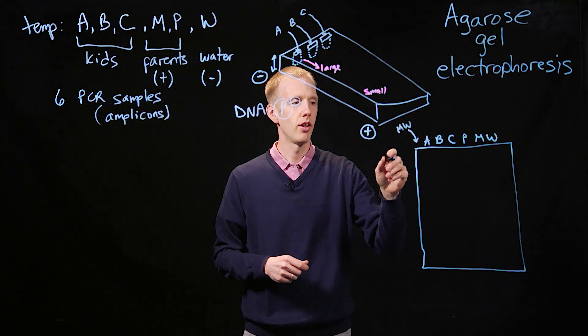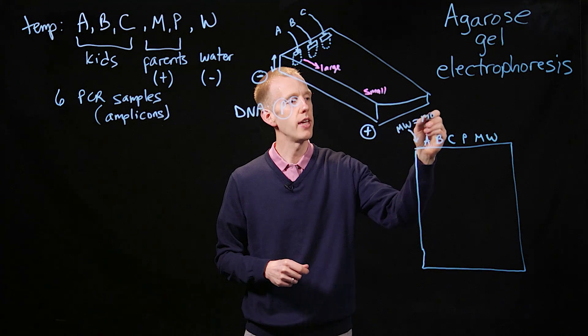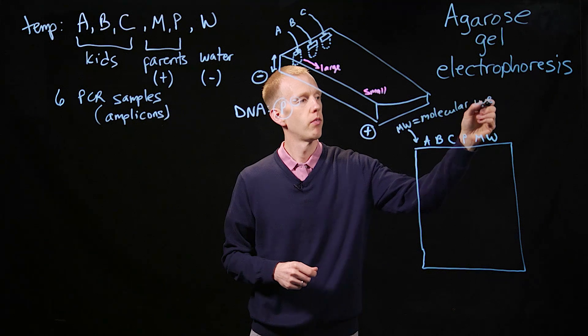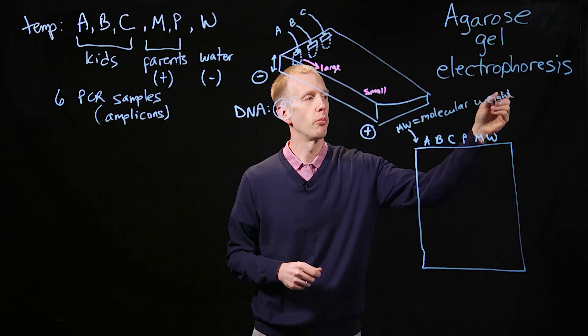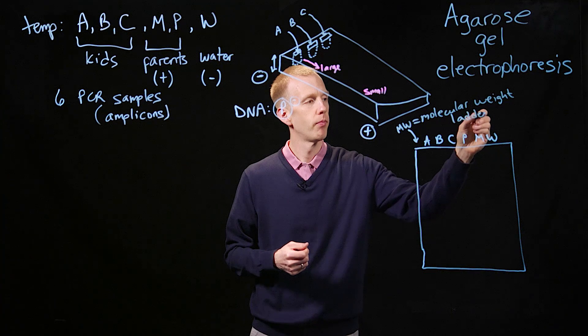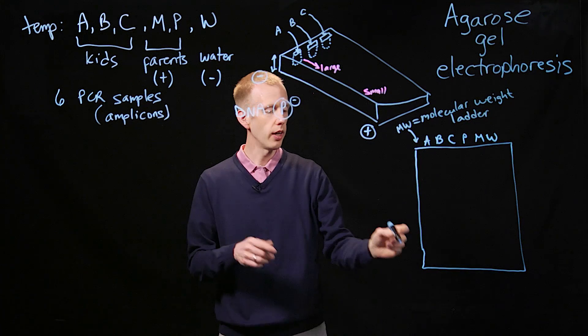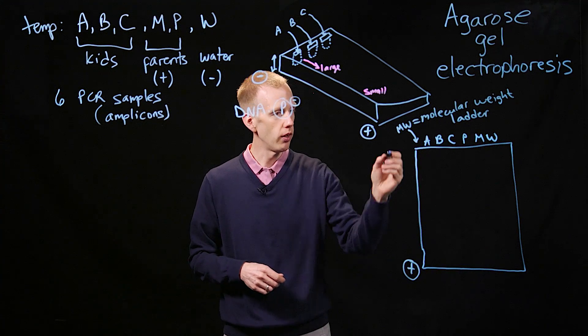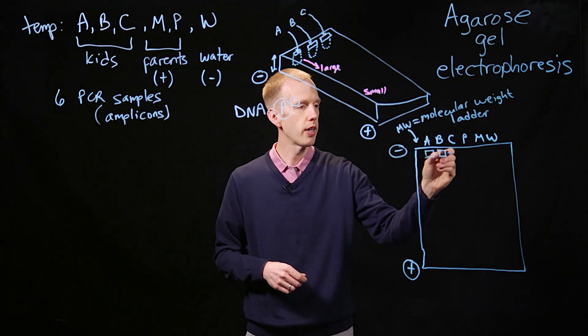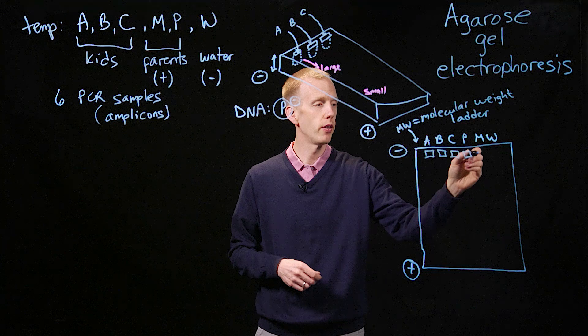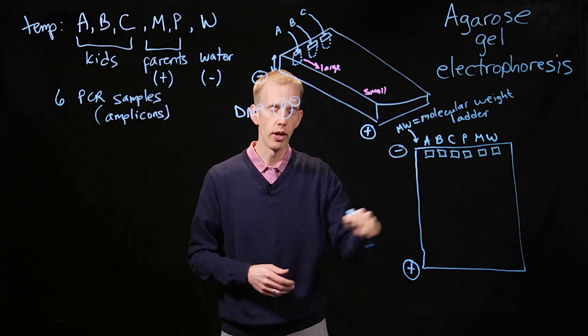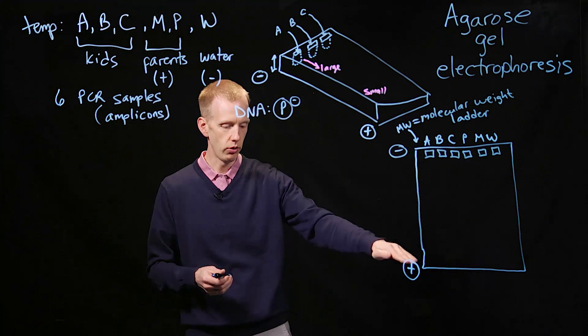That's molecular weight standard, or sometimes called molecular weight ladder. So again, the positive charge is here at the bottom of the gel. The negative charge is placed at the top. Each of these samples gets loaded into its own little hole in the gel. The electric field is applied. The DNA is going to migrate from the top of the gel down to the bottom of the gel.